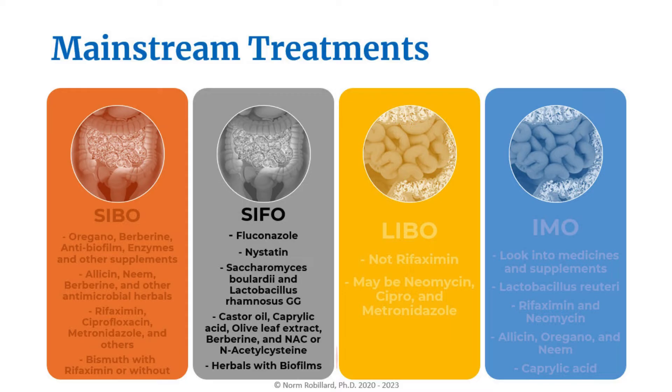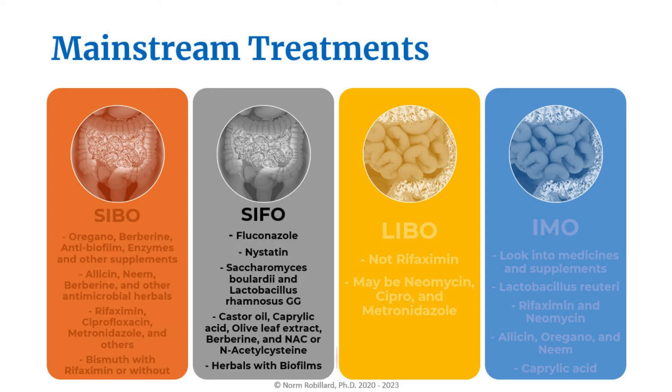For SIFO, pharmaceutical antifungals are most recommended. Fluconazole is recommended by Dr. Rao. Nystatin is also a possibility — one benefit is that it's not systemically absorbed, though there is still a question about how well this drug survives stomach acid. Some data in infants suggest that the probiotics Saccharomyces boulardii and Lactobacillus rhamnosus GG might also be effective. There are also supplement and herbal treatments, which include castor oil, caprylic acid, olive leaf extract, berberine, and NAC or N-acetylcysteine. In general, the data supporting these herbal treatments is limited. Keep in mind we actually depend on healthy biofilms on the mucosal surface, and disrupting those is a real question mark.